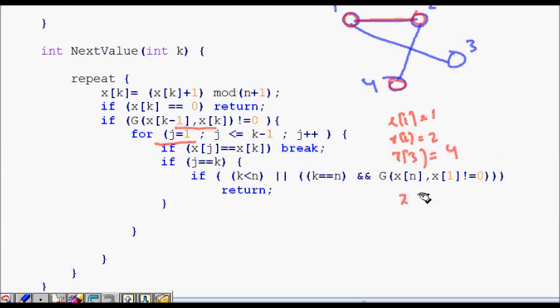Then I am trying for x4. x4, I try 1, it is not good. 2 I try, it's not good because it's already there in the cycle. Then I try 3.